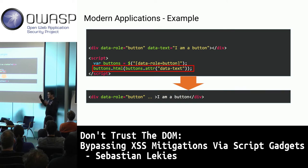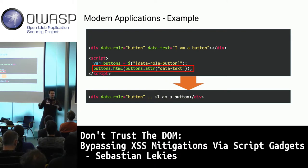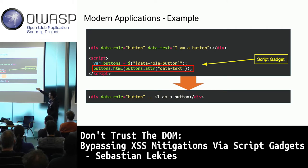Let's assume this page has an XSS vulnerability and XSS mitigations are in place to defend against attacks. But we have what we call a script gadget. This is legitimate functionality contained in the page that upgrades a data-text attribute to HTML.